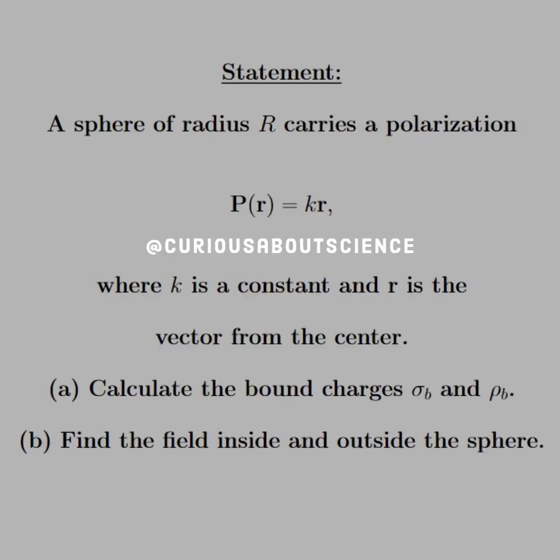Welcome back. Our statement reads: a sphere of radius R carries a polarization P of r equals kr, where k is a constant and r is the vector from the center.